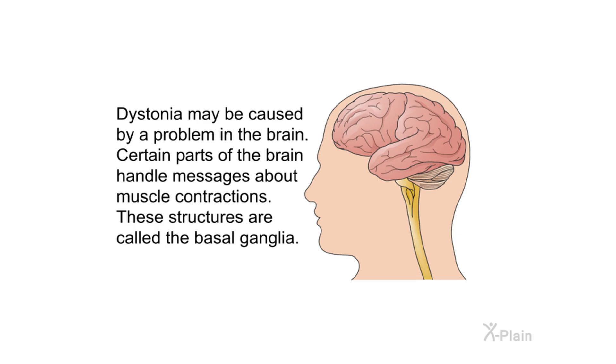Dystonia may be caused by a problem in the brain. Certain parts of the brain handle messages about muscle contractions; these structures are called the basal ganglia.